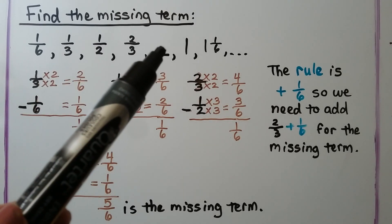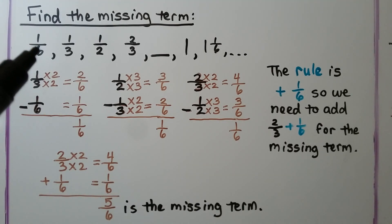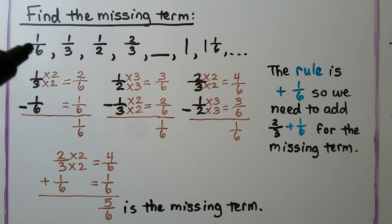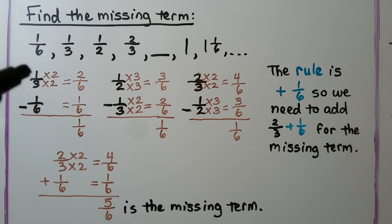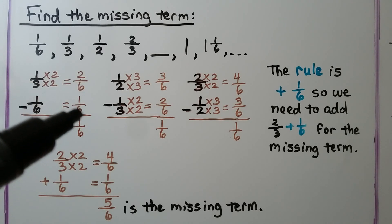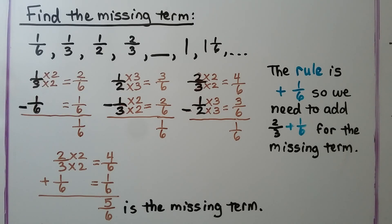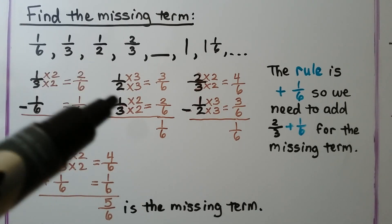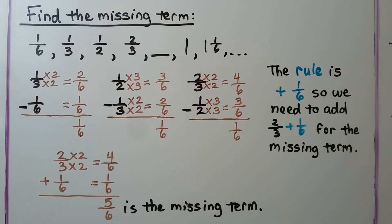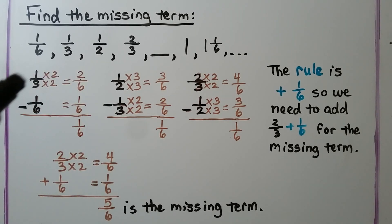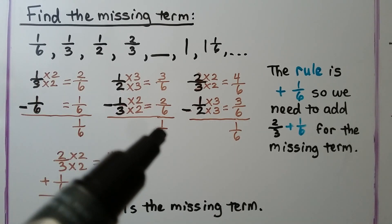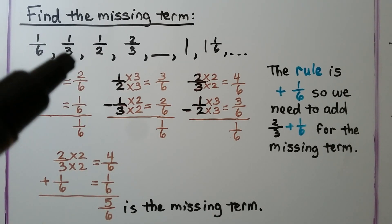Here we have a sequence with a missing term. The denominators are six, three, two, then three again, and one with a six. We can give them all six as a common denominator. We take one sixth and subtract it from one third: one third minus one sixth, giving both a six for a common denominator gives two sixths minus one sixth — that's one sixth. Then three sixths minus two sixths is one sixth. So far, the difference is one sixth between each term.